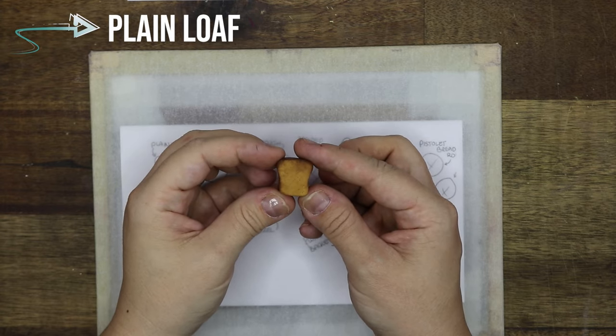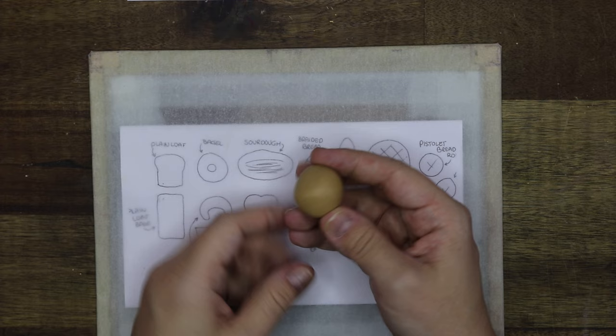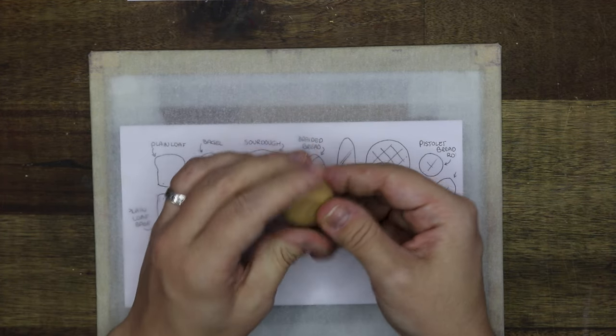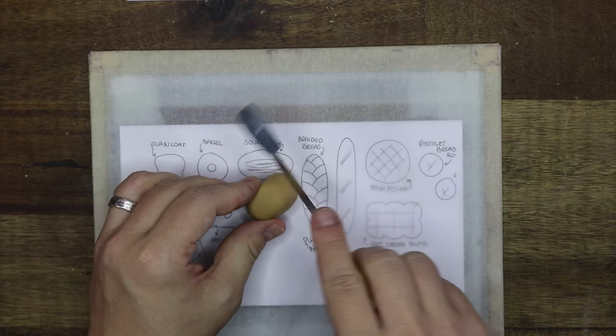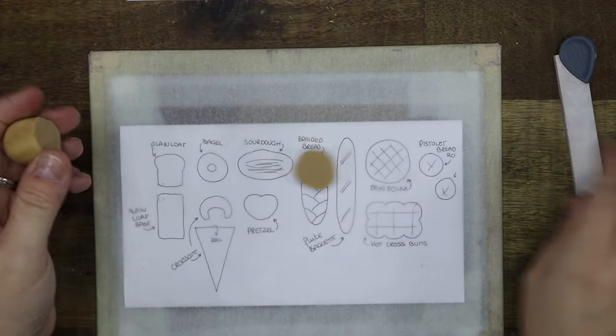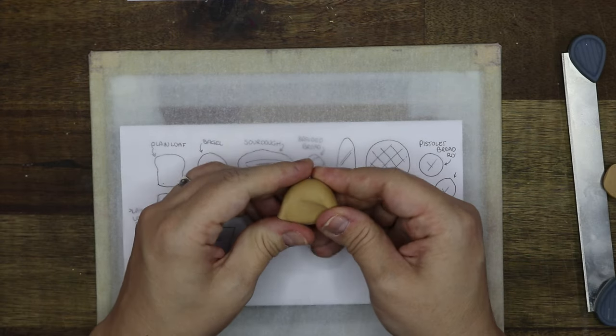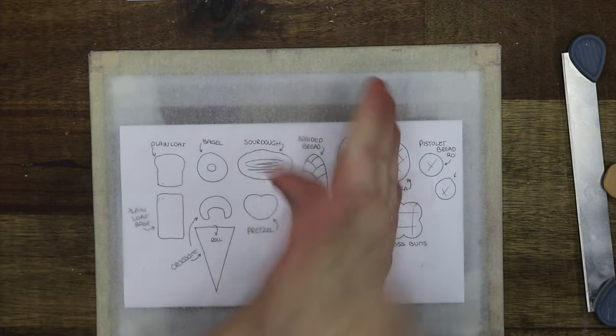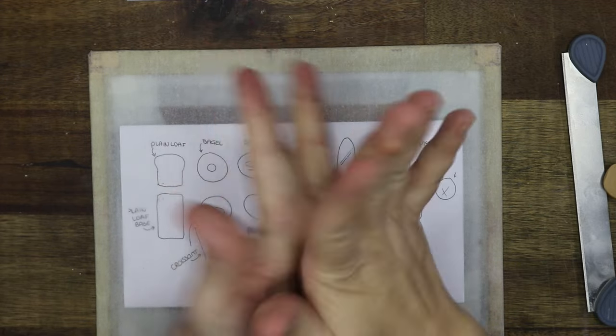The first bread we're going to make is a plain loaf of bread. I grab a chunk of clay and make sure I have the right amount of clay for the loaf. I do this by checking the template and shaping it according to the base. I then roll it out in between my hands and on the plate.